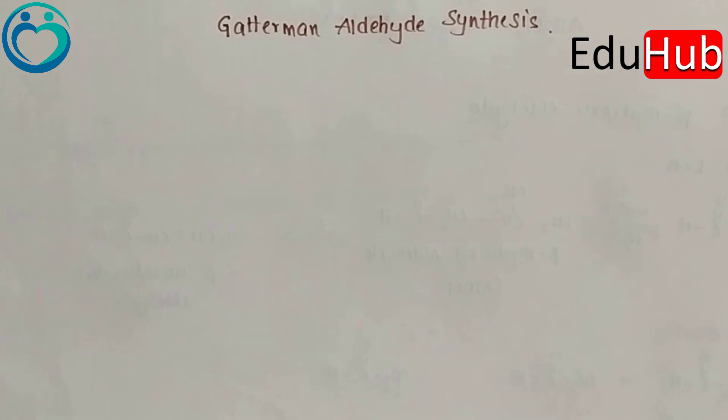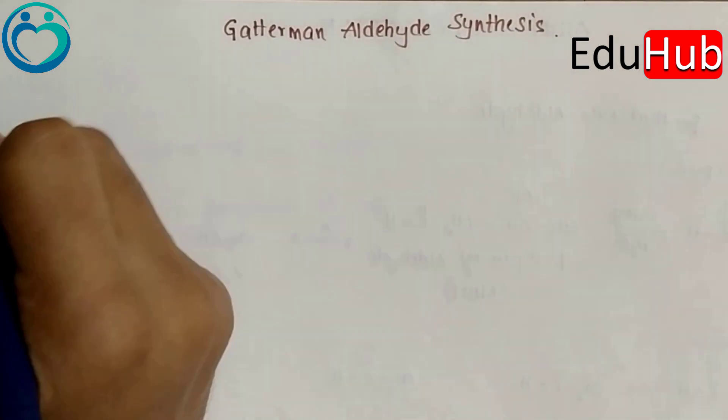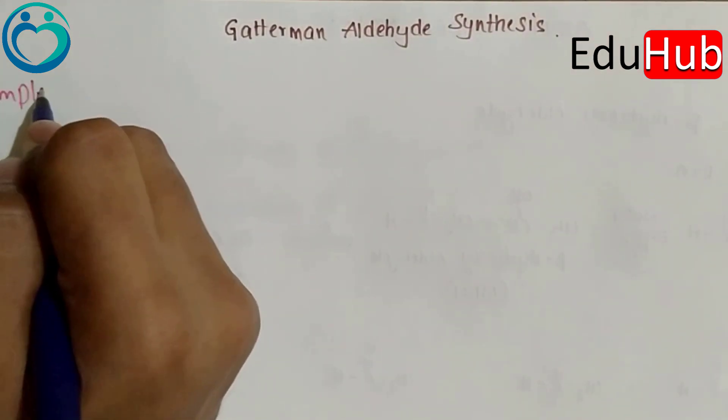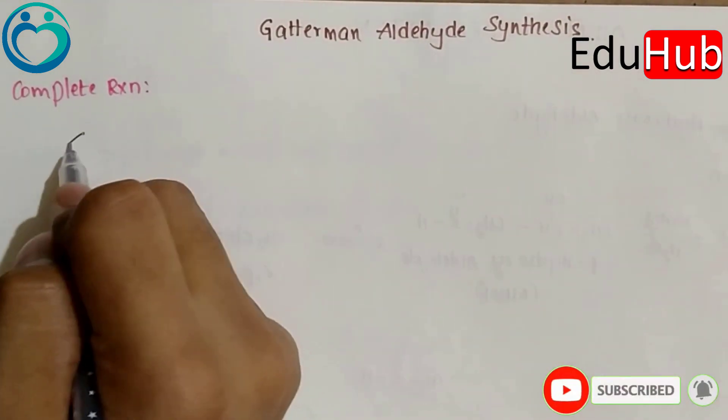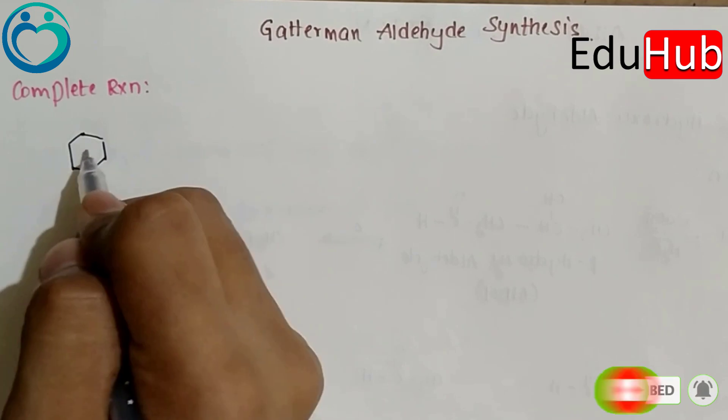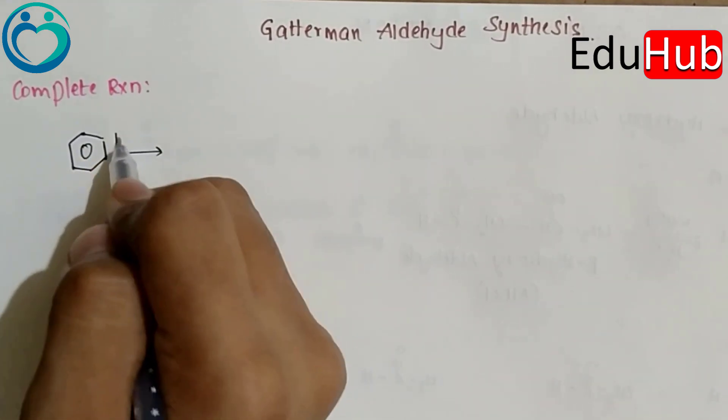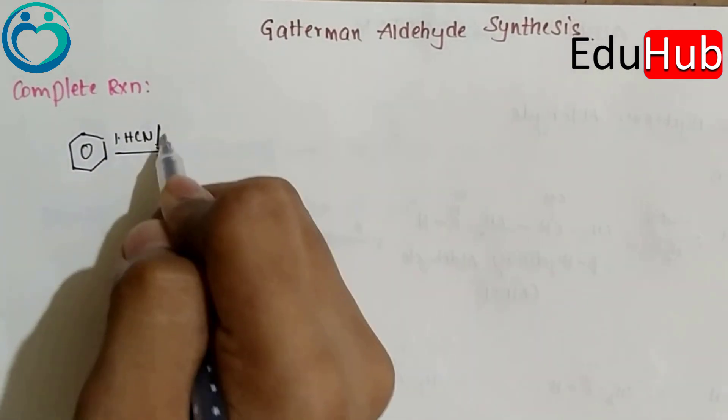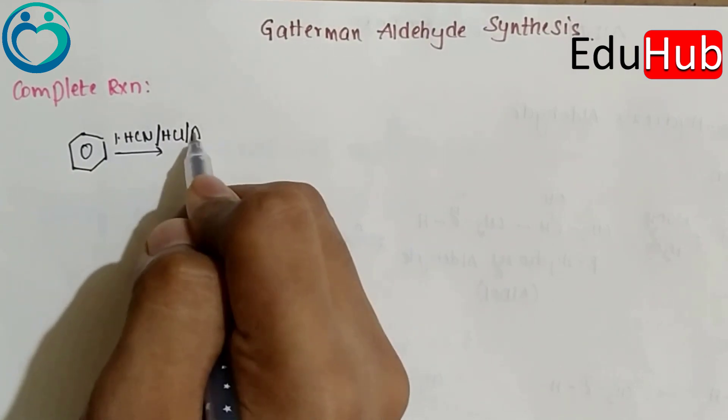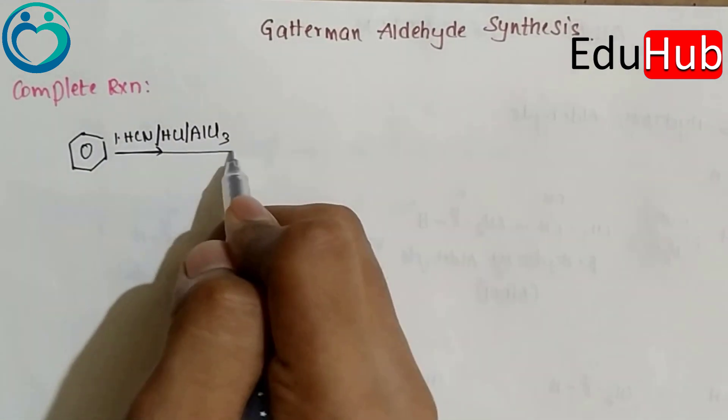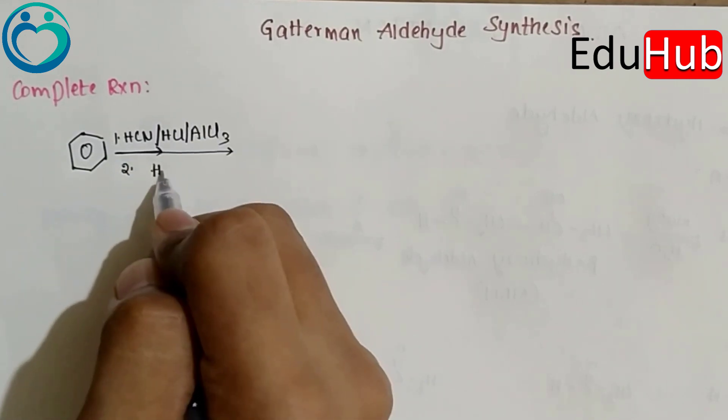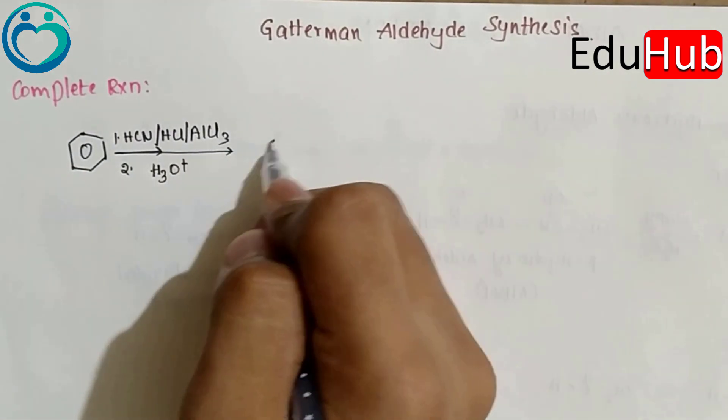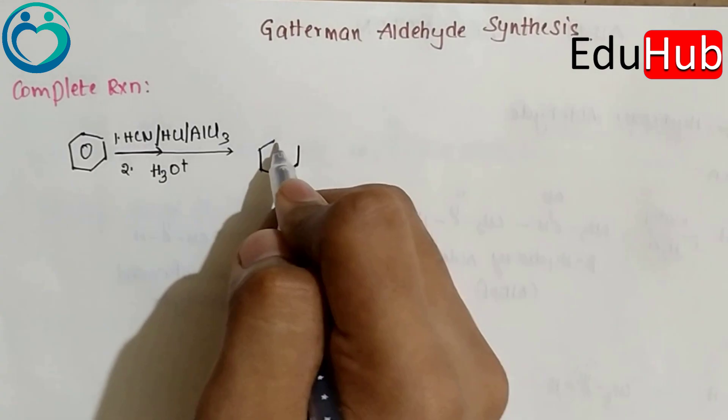Its complete reaction is: benzene in presence of HCN, HCl and AlCl3, and in second step H3O+ gives benzaldehyde.